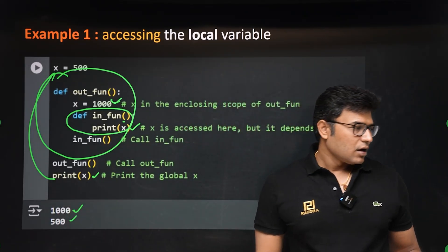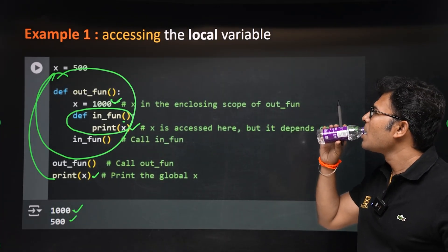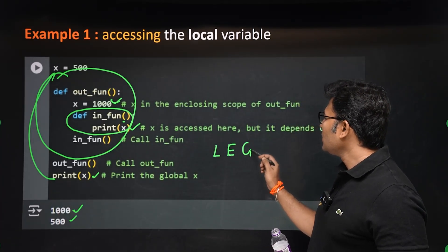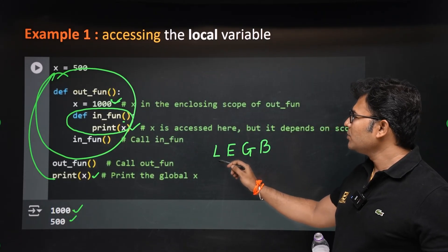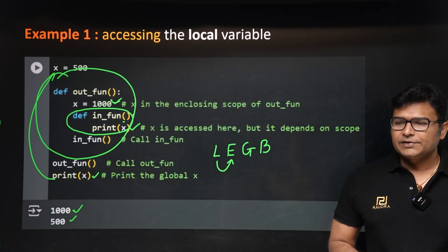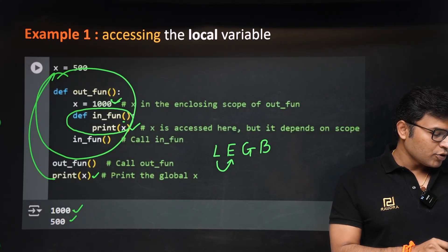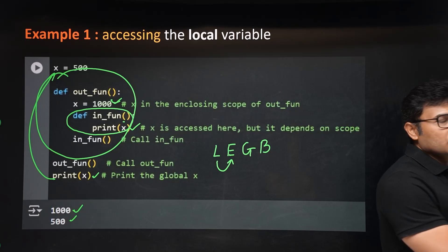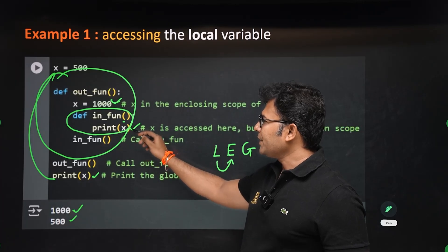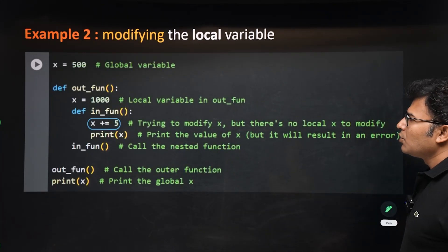The LEGB rule applies: Local, Enclosing, Global, Built-in. When you come out of the inner function and print x, the global value 500 is taken. But the problem is — what if I don't want to just access the variable, but actually modify it? That's where the non-local keyword plays a key role.